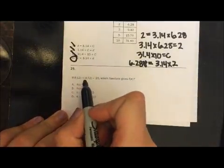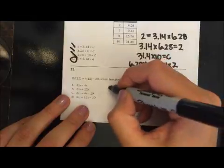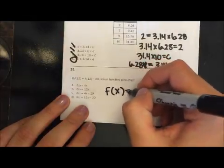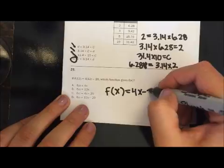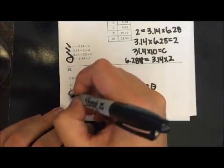Then last one. If F of 12 equals 4 times 12 minus 20, which function gives F of X. So let's just pretend the 12 wasn't there and it was X. So instead of a 12 being there, there's going to be an X there. So 4X minus 20 looks like C.